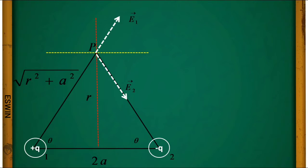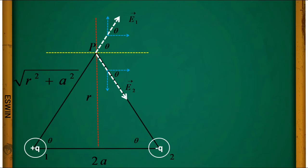To resolve a vector, we draw lines parallel to the x-axis and y-axis. The angle between the x-component and E1-bar will be theta, because they are corresponding angles. The angle between E2-bar and its x-component will again be theta, because they are alternate interior angles.